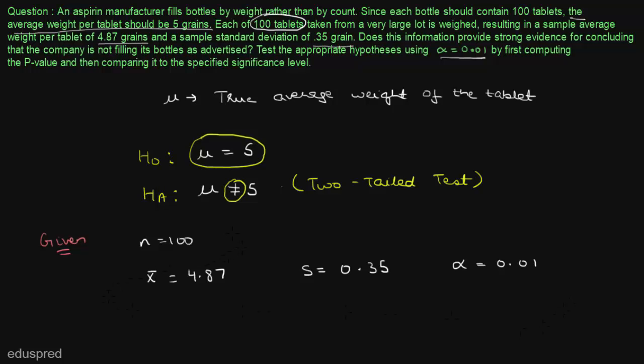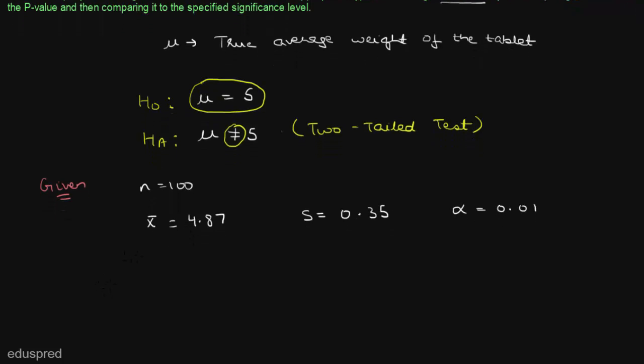Now let us move to step 3 and talk about the distribution of the sample mean and the rejection region. Note that we are not given any information about the distribution of the population, but we know that our sample size is large enough to use the central limit theorem. Using the central limit theorem, we can say that the distribution of the sample mean will be approximately normal.